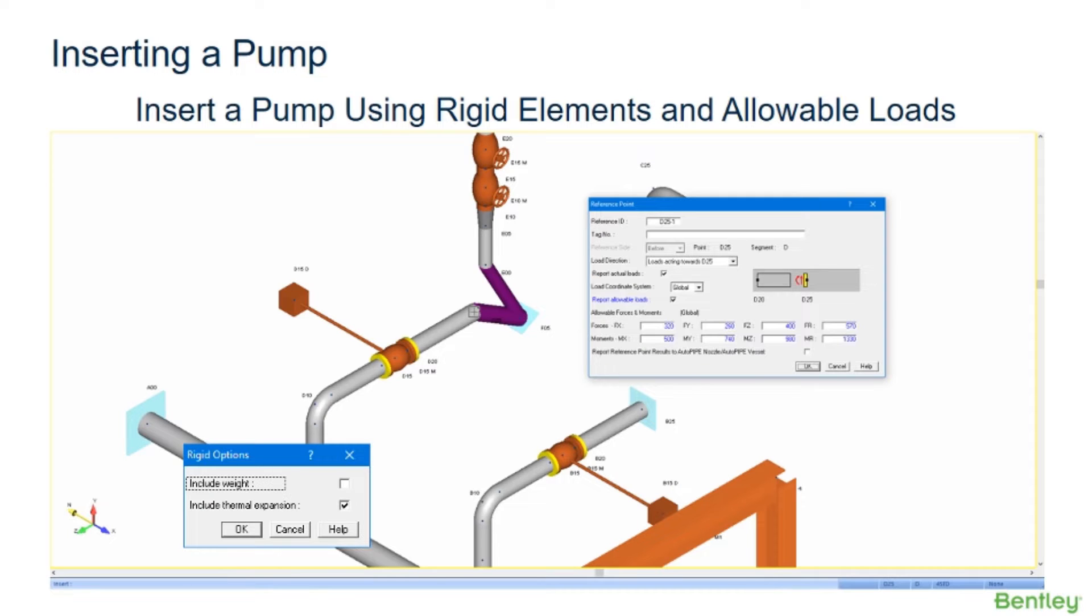Reference points can also be used to model the suction and discharge points of rotating equipment. With this method, a simplified modeling approach is to use rigid elements to model the rotating equipment, and this allows for the modeling of the equipment and its supports.